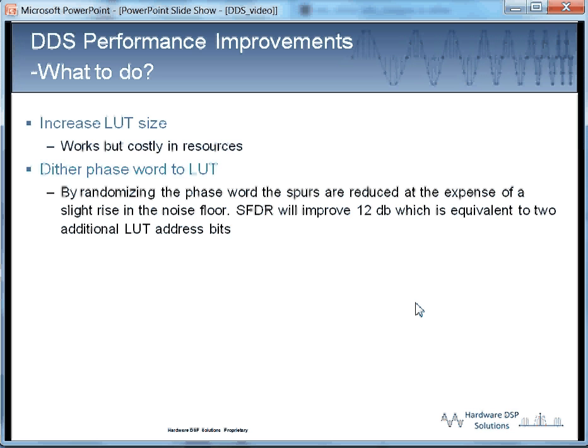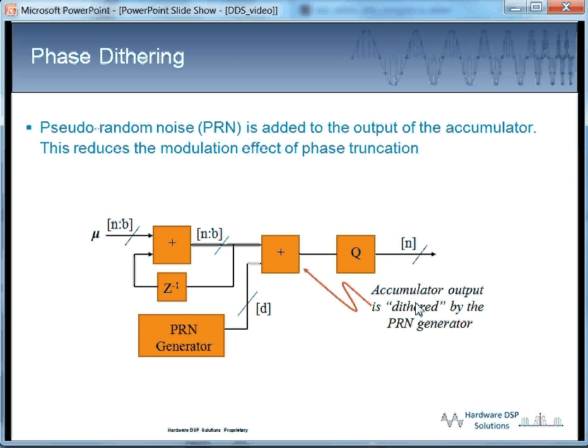We can dither the phase word. Those tones are caused by truncating the phase word away. We cause a modulation, if you will. We create these side tones, and we can get rid of that modulation or side tone by simply randomizing, adding some noise to the phase word. And how much improvement can we get? We can get actually two bits worth. We can improve the spurious-free dynamic range by 12 dB. So where do we add that noise? Seen here, we add the noise to the output of the accumulator. And then the question is, how much noise do we want to add? Let's take a look at a DDS in motion.